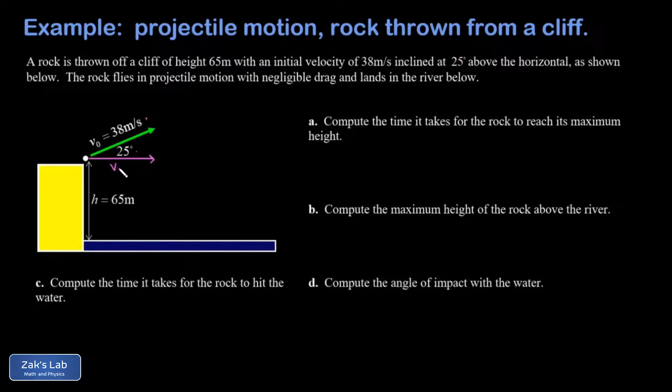We're going to start out by breaking this launch velocity into components. I have v₀ₓ here, that's the adjacent side, so I get 38 cosine 25 degrees. That gives me about 34.4 meters per second. So this rock is moving sideways at 34.4 meters every second.